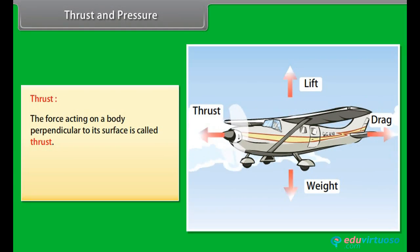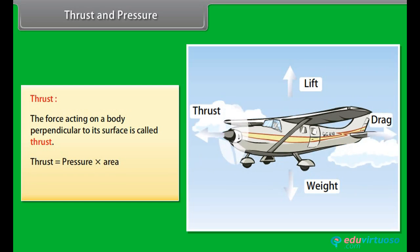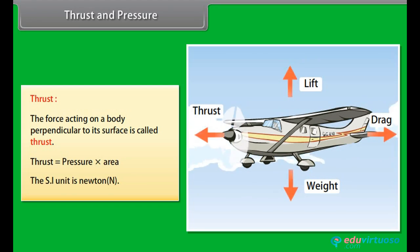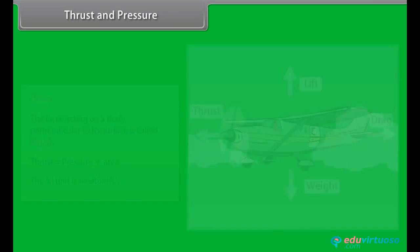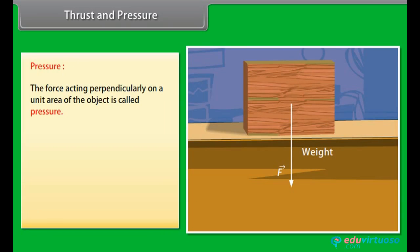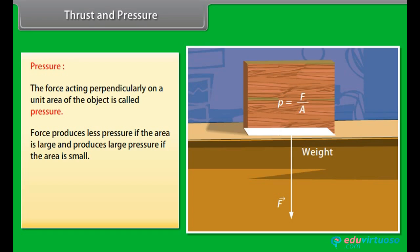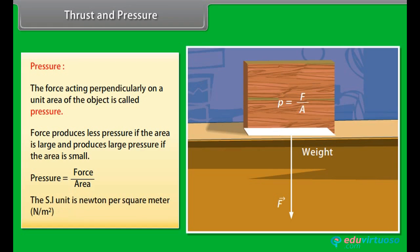Thrust and pressure. Thrust: the force acting on a body perpendicular to its surface is called thrust. Thrust is equal to pressure times area. The SI unit is Newton. Pressure: the force acting perpendicularly on a unit area of the object is called pressure. A force produces less pressure if the area is large and produces large pressure if the area is small. Pressure is equal to force upon area; the SI unit is Newton per square meter.